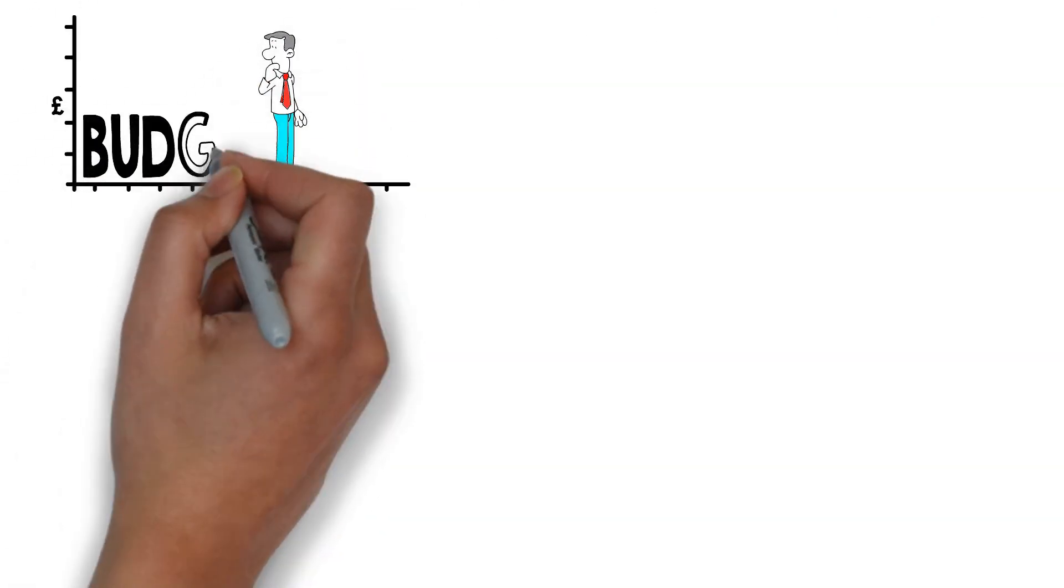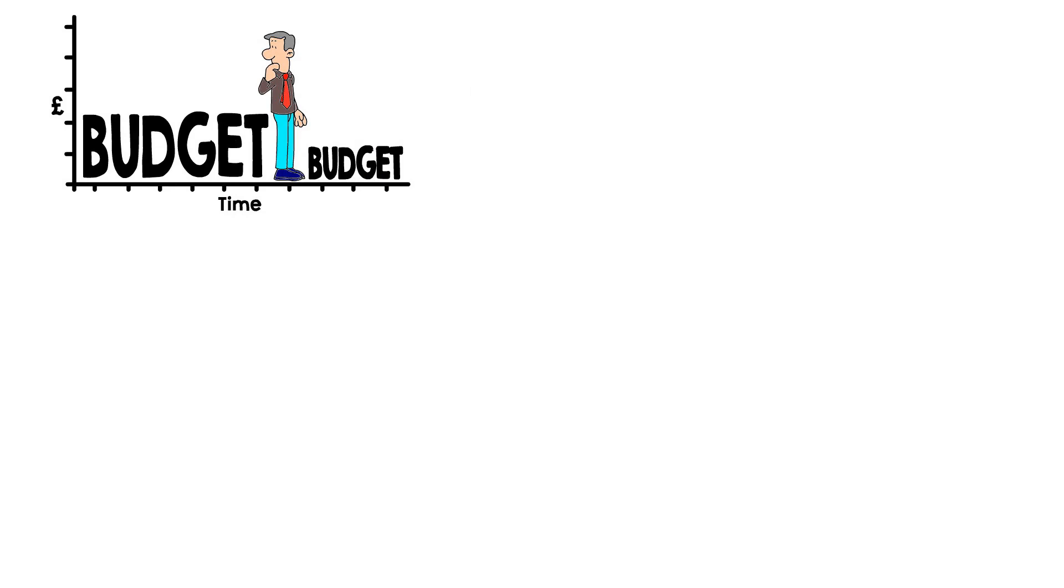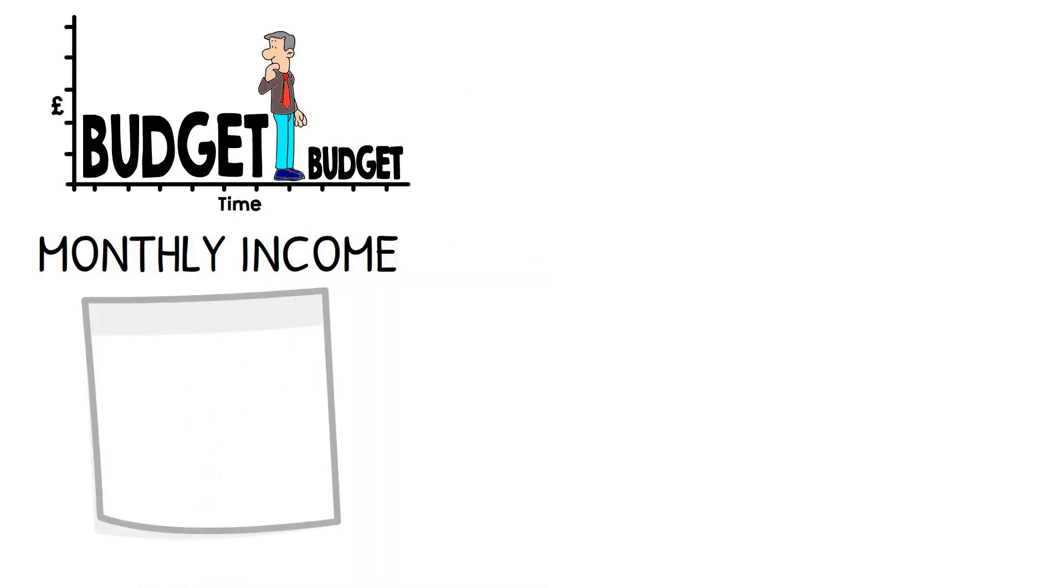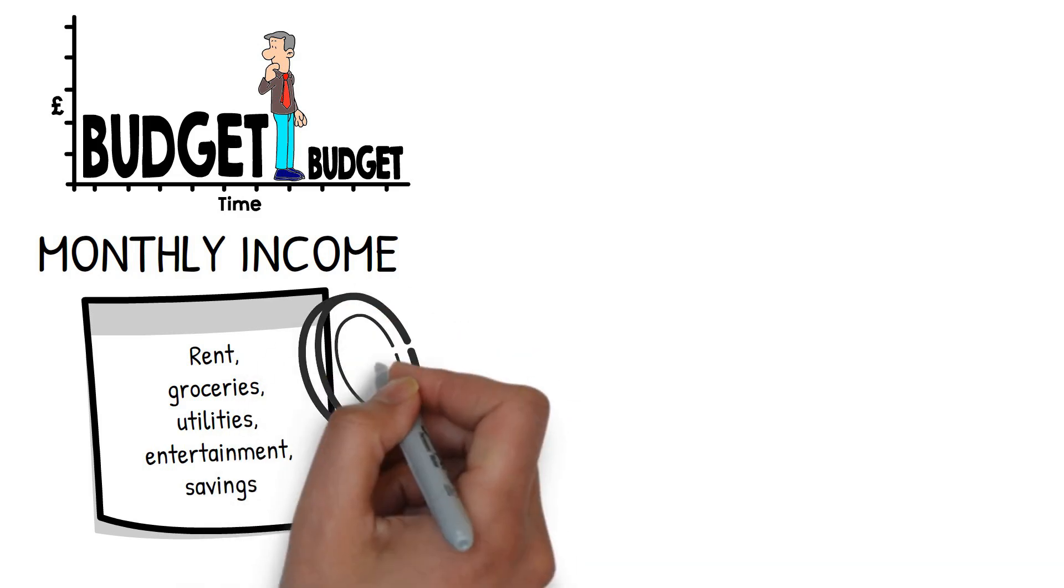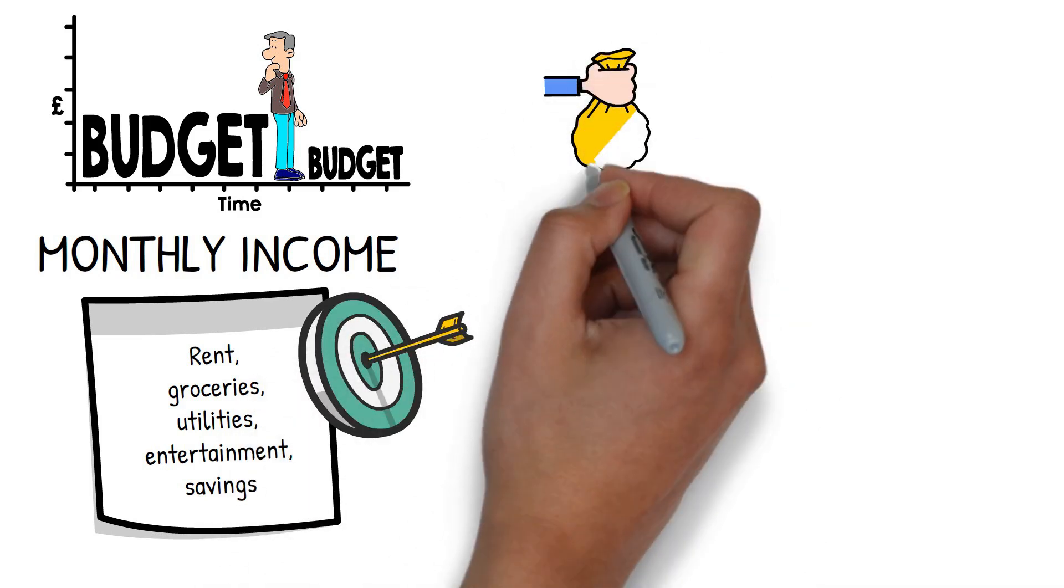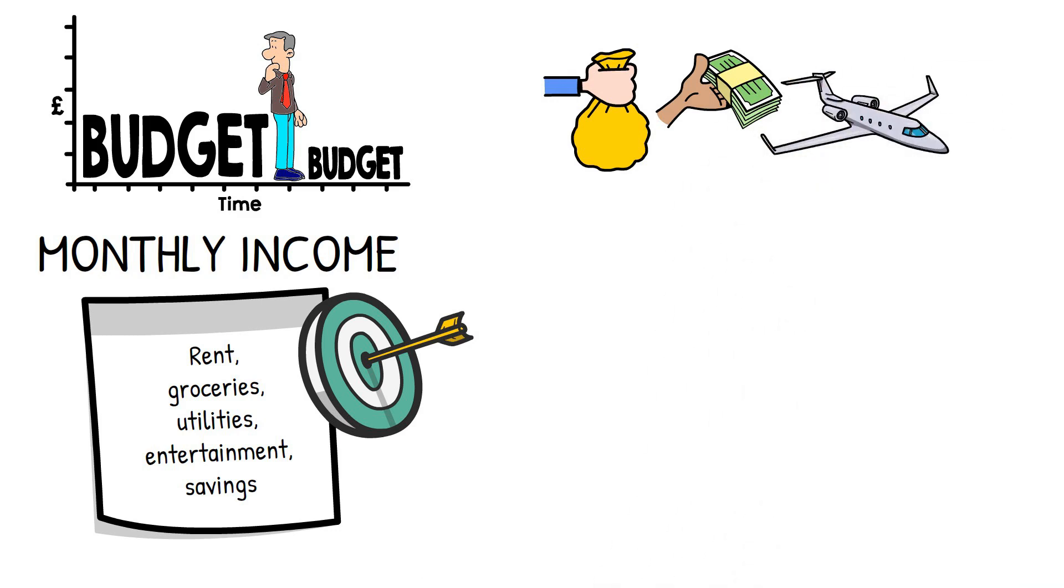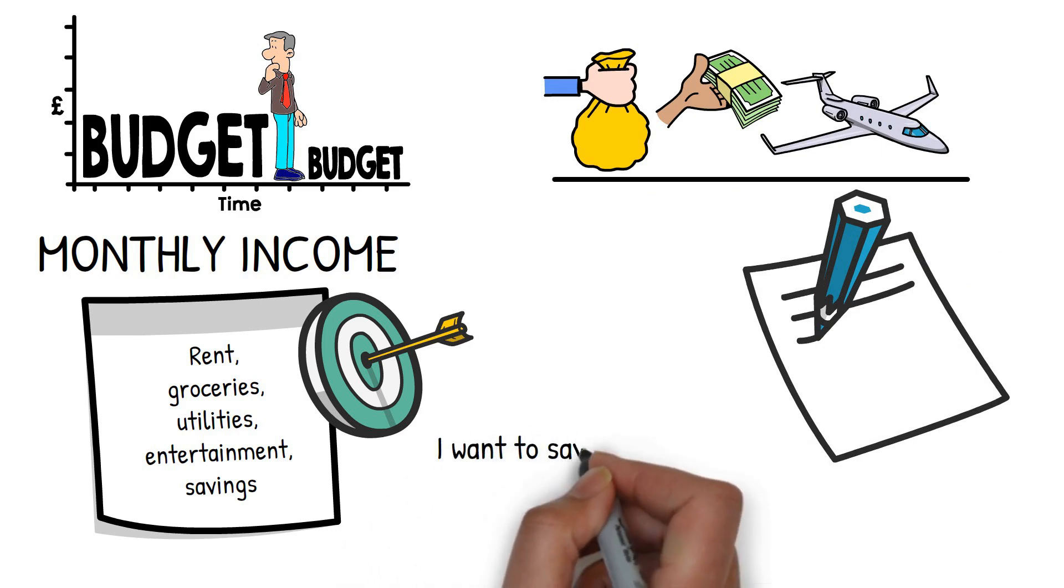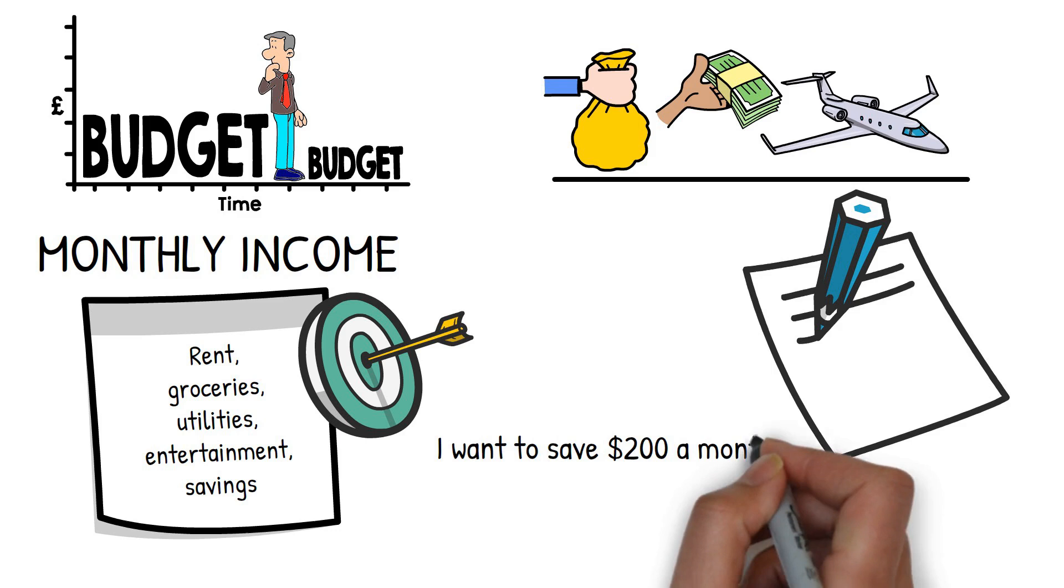Creating a budget is a crucial part of setting money goals. A budget helps you keep track of your income and expenses, ensuring that you're living within your means and saving for the future. It doesn't have to be complicated. Start by listing your monthly income and then categorize your expenses: things like rent, groceries, utilities, entertainment, and savings. This way, you can see where your money is going and make adjustments as needed. Once you have a budget in place, you can start setting specific goals. Maybe you want to save a certain amount each month, pay off debt, or set aside money for a vacation. Whatever your goals are, write them down and make them as specific as possible. Instead of just saying, I want to save more money, say, I want to save $200 a month. This specificity makes your goals more tangible and easier to track.